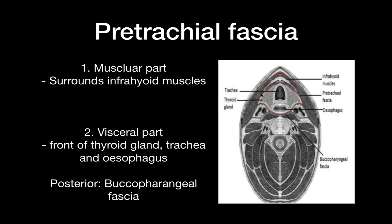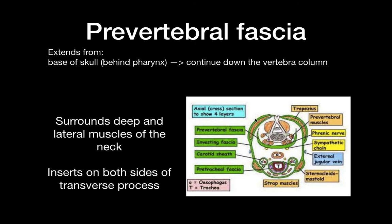The next fascia is the prevertebral fascia. It extends from the base of the skull, behind the pharynx, and continues all the way down the vertebral column. As you can see here, this is the prevertebral fascia — this is the vertebra, and this is the prevertebral fascia. It surrounds the deep and lateral muscles of the neck, and it also inserts on both sides of the transverse process.